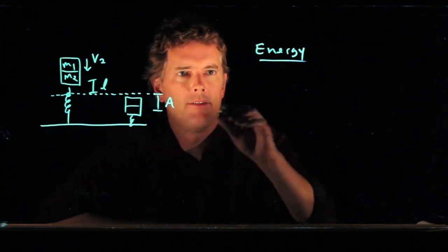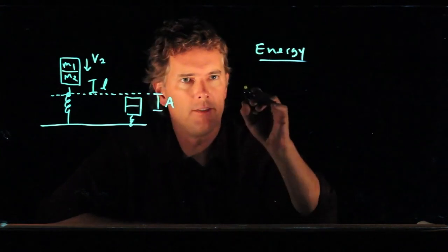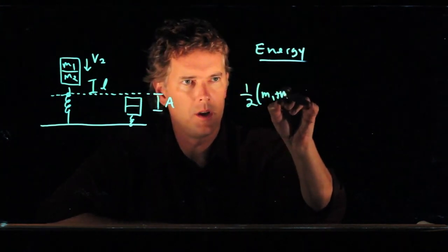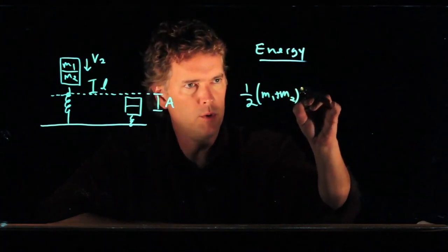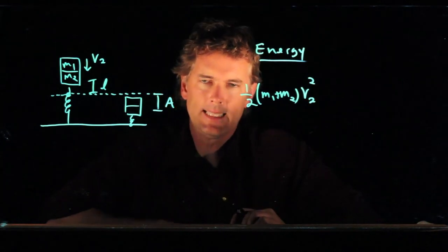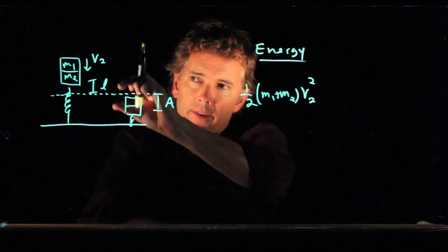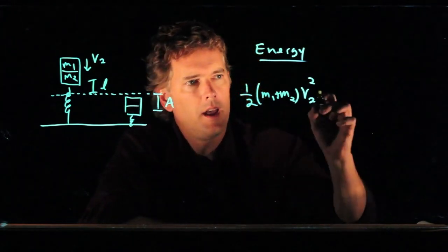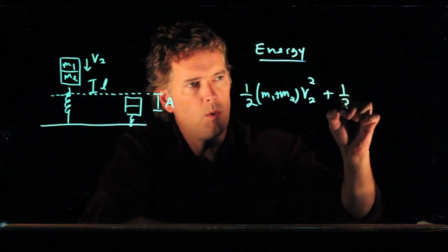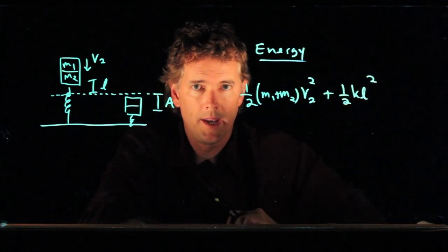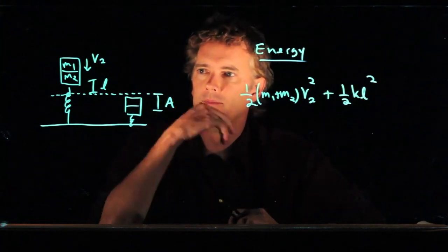So what do we have? Initially we have kinetic energy. We have two masses, M1 and M2, moving at speed V2. But in that picture we also have a little bit of stretch to the spring. And that amount of stretch is L, and so the energy is one half K L squared.